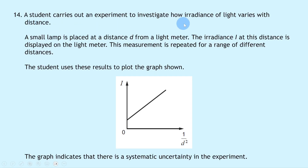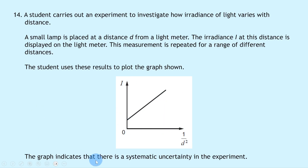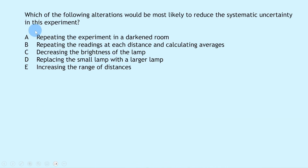Question 14 involves an experiment investigating how irradiance varies with distance. The graph of irradiance against 1/d² is offset from the origin, indicating systematic uncertainty. The options include: repeating in a darkened room, repeating readings and calculating averages, decreasing lamp brightness, replacing with a larger lamp, or increasing the range of distances. Since the experiment measures light levels, the most likely way to reduce systematic uncertainty is to repeat the experiment in a darkened room, giving answer A.